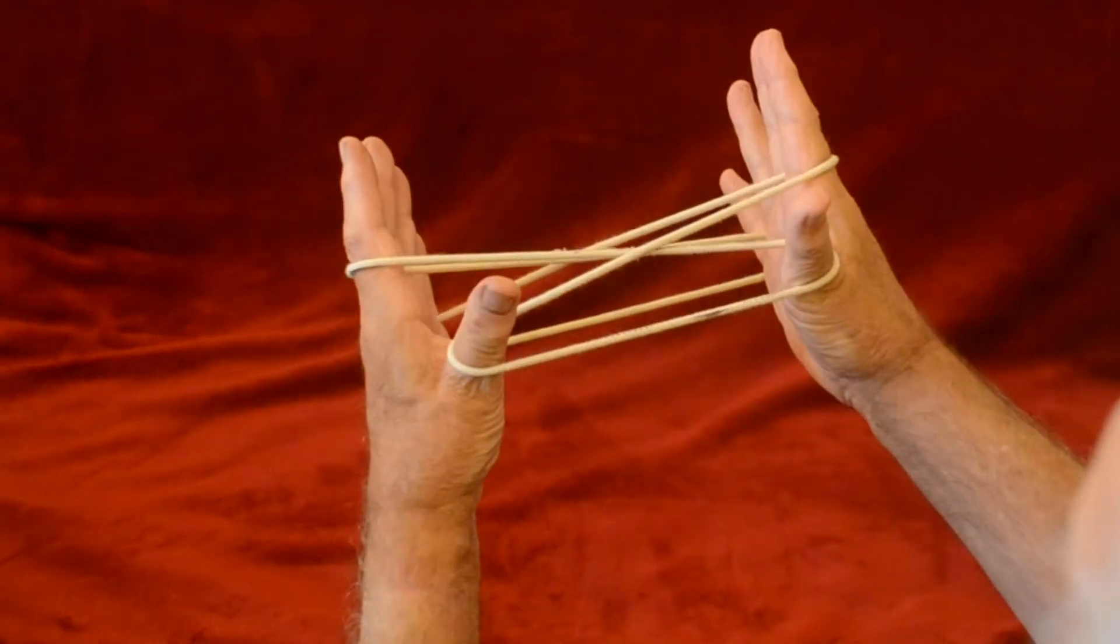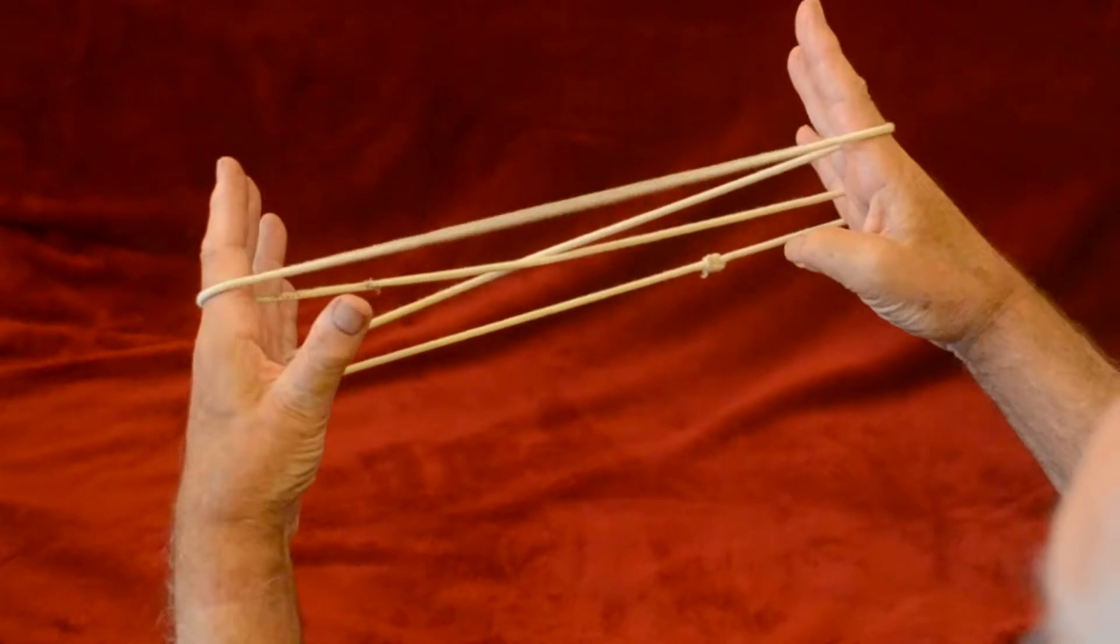Index fingers go across and make opening A, release the thumbs, thumbs go under all the strings.